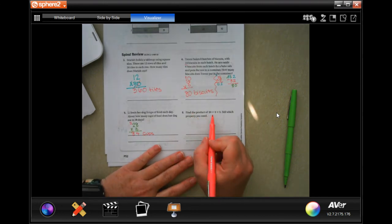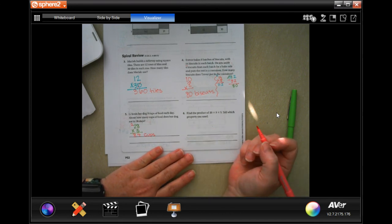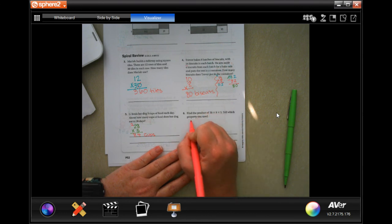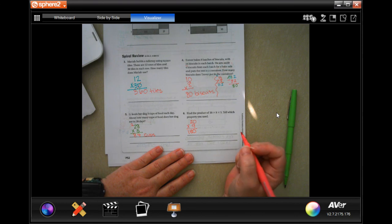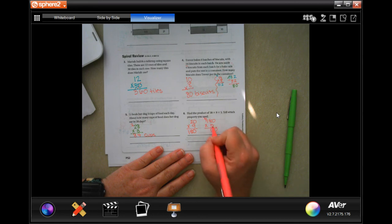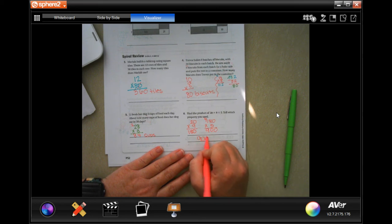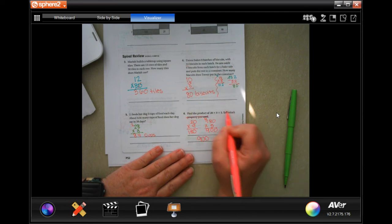All right. Find the product of 20 times 9 times 5 and tell which property you use. Well, I'm just going to do 20 times 9 and I'm going to get 180. Because 2 times 9 is 18. I'm going to add that 0 in the end. Then I'm going to do 180 multiplied by 5. Well, 5 times 0 is 0. 5 times 8 is 40. Carry 4. 5 times 1 is 5. Plus 4 is 9. So, 900. And I'm not going to worry about telling which property we used right now because we didn't actually use one of the properties.